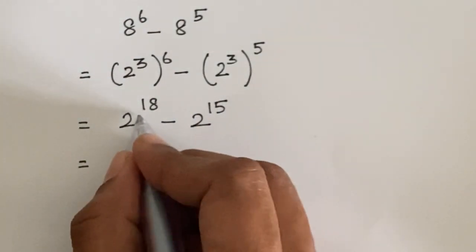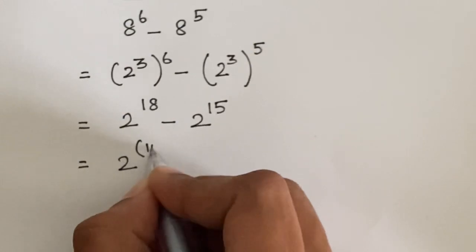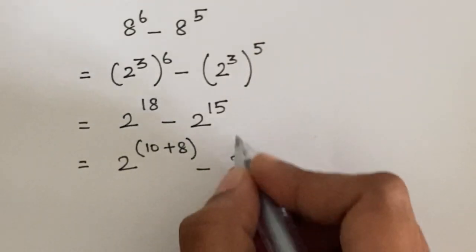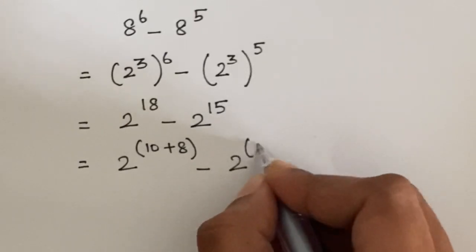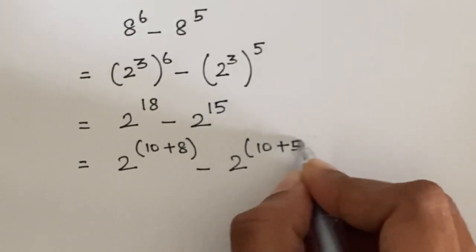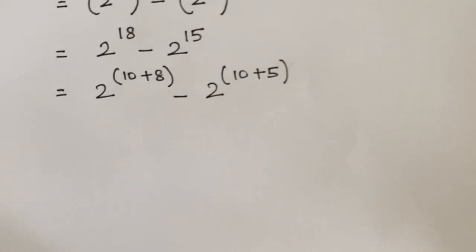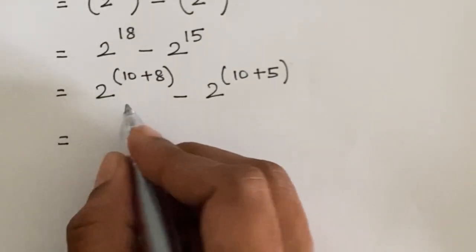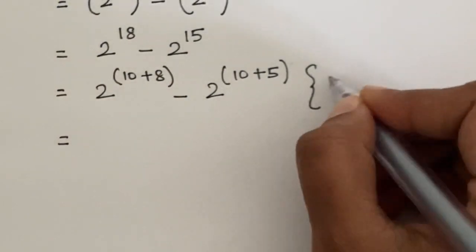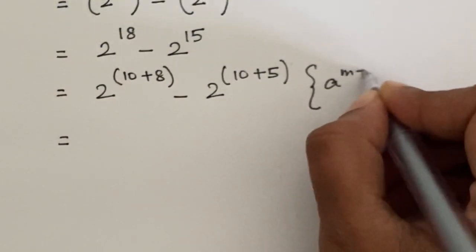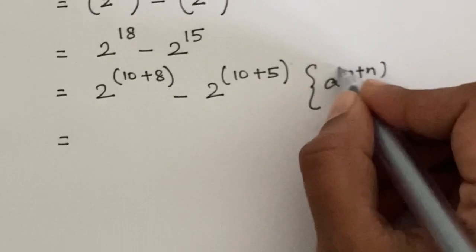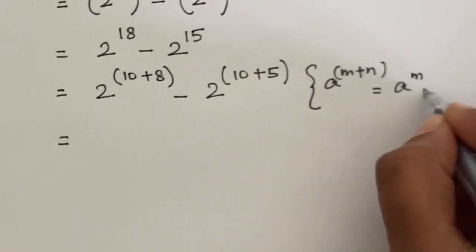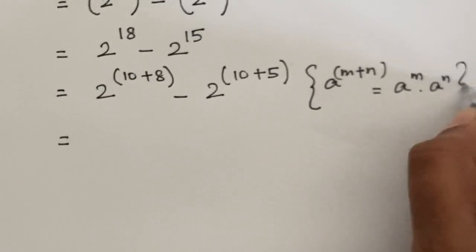2 to the power 18 can be written as 10 plus 8, and 2 to the power 15 can be written as 10 plus 5. Here we apply the formula: a to the power m plus n equals a to the power m times a to the power n.